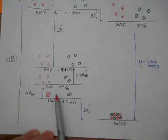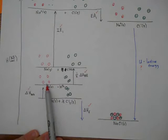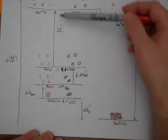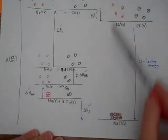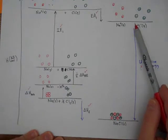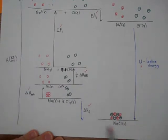The other thing we could do is go around this cycle. Starting here, first step sublimation, second step bond enthalpy, third step first ionization energy, fourth step electron affinity. The fifth step takes us down to that same place, the sodium chloride solid, and that's our lattice energy.